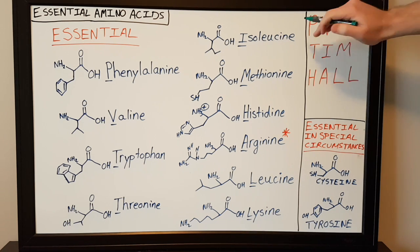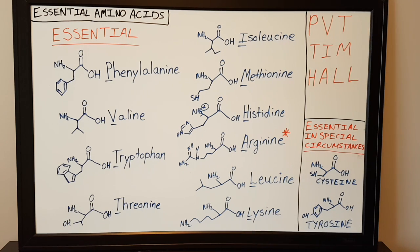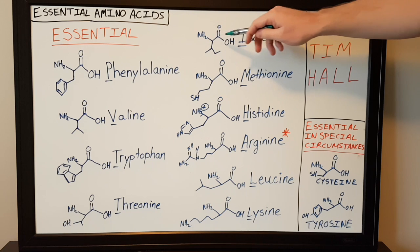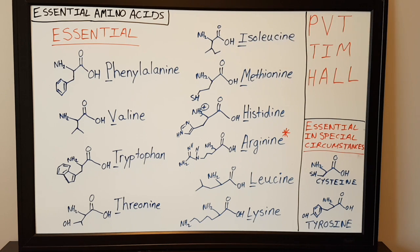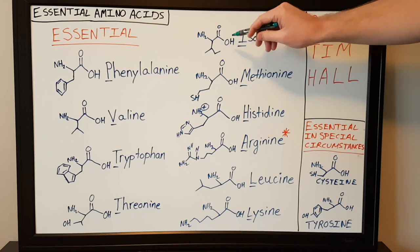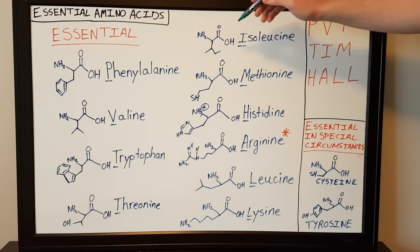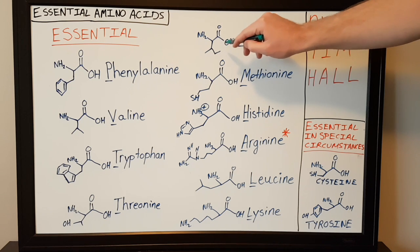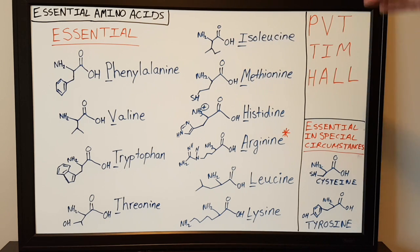The next amino acid is isoleucine. It has the classical amino acid structure with a side chain similar to valine, but with an extra methyl group attached to it. Isoleucine is also one of the branched chain amino acids.